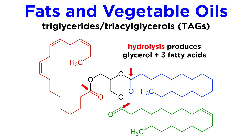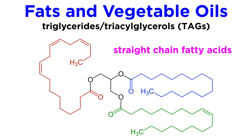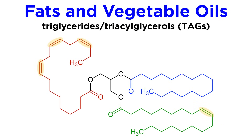Going in reverse, this triacylglycerol can undergo hydrolysis to yield glycerol and three fatty acids. The carbon chains on the fatty acids are generally unbranched, so they are straight chains, and they can vary both in length and in terms of degree of saturation. They typically contain an even number of carbons between 12 and 20. Also, there can be one or more pi bonds on these chains, or they can be fully saturated.